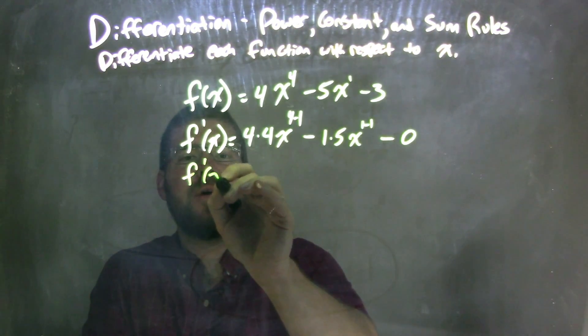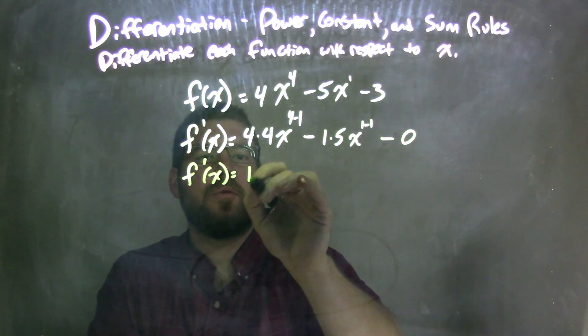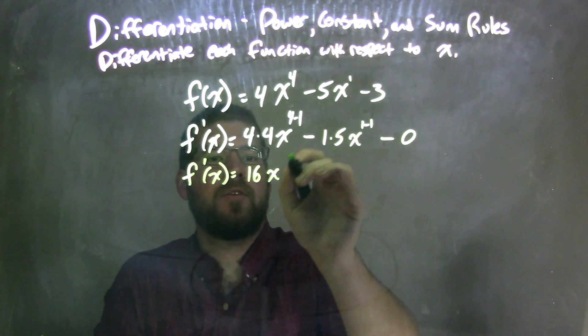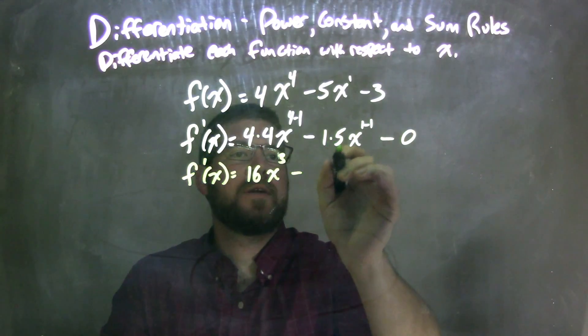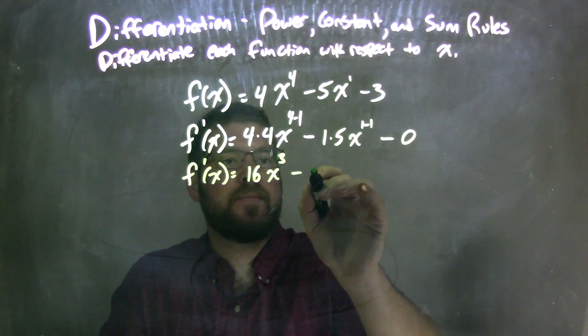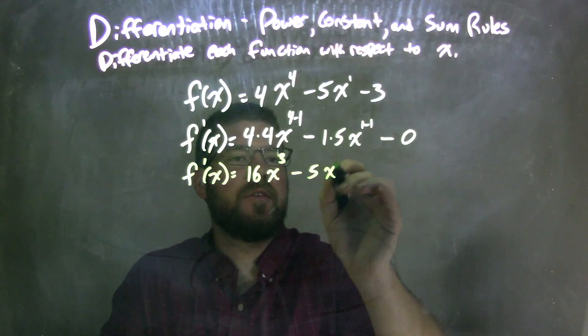So we have f prime of x is equal to 4 times 4, which is 16x to that 4 minus 1, which is 3, third power, minus 1 times 5, which is 5, and then x to the 0 power.